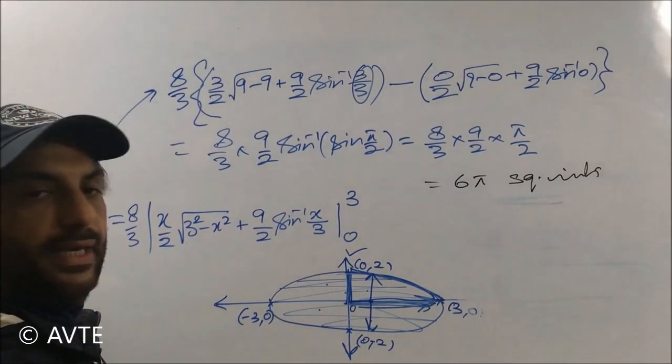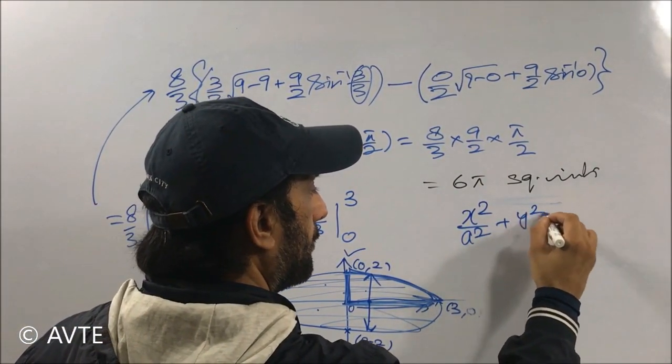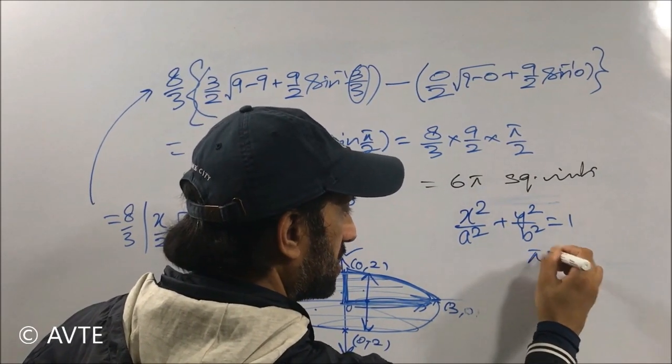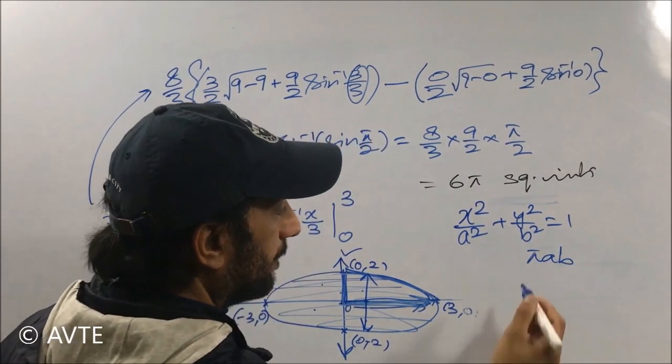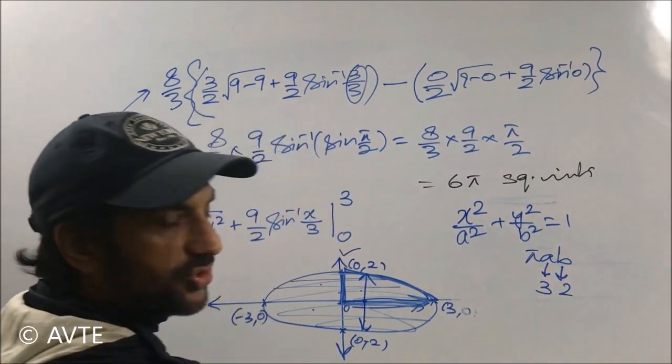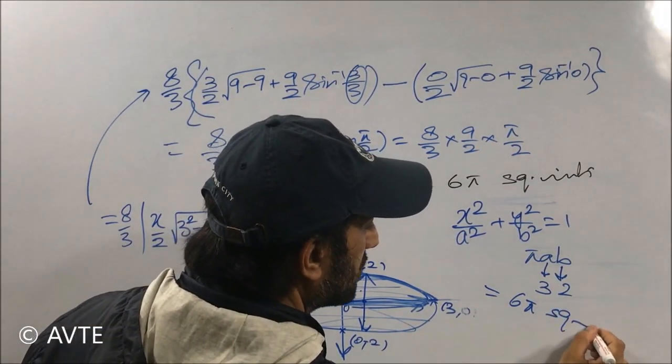Whenever you have ellipse in the standard form, its area is, total area enclosed by it, is pi AB. And here, a was 3, and b was 2. So the answer has to be 6 pi square units.